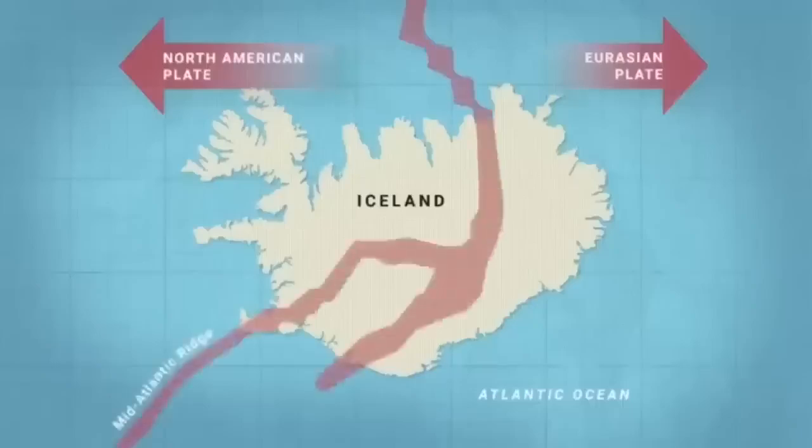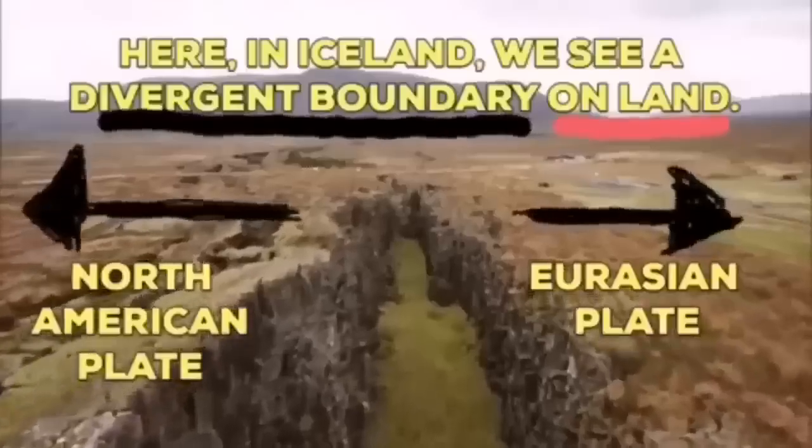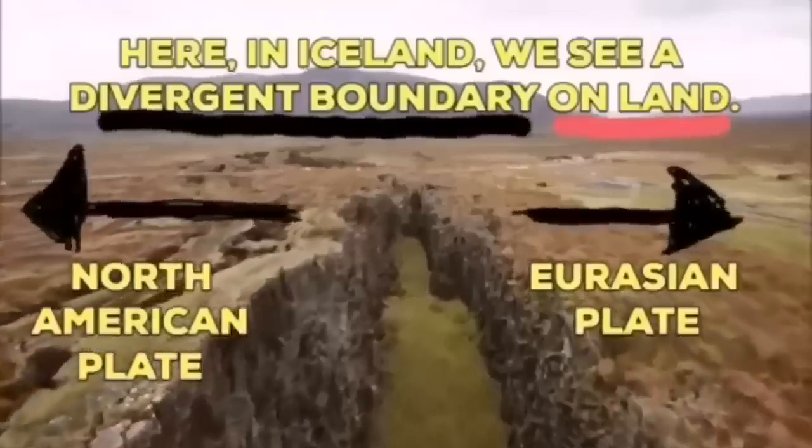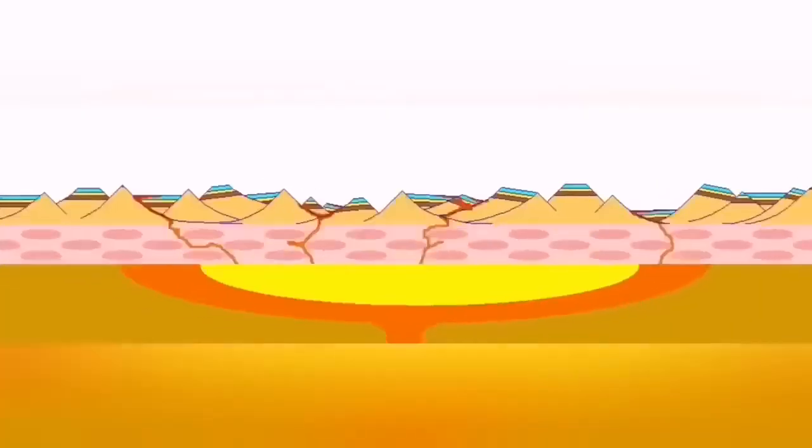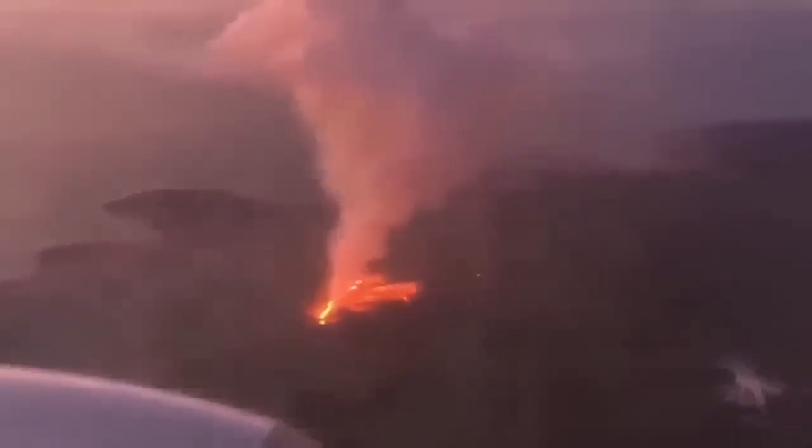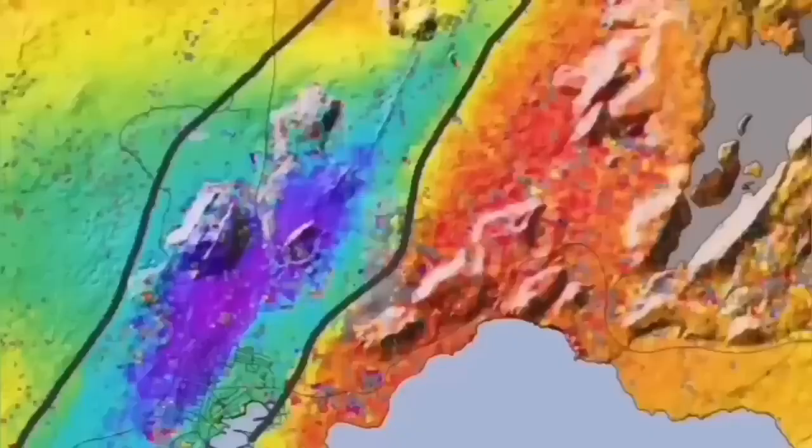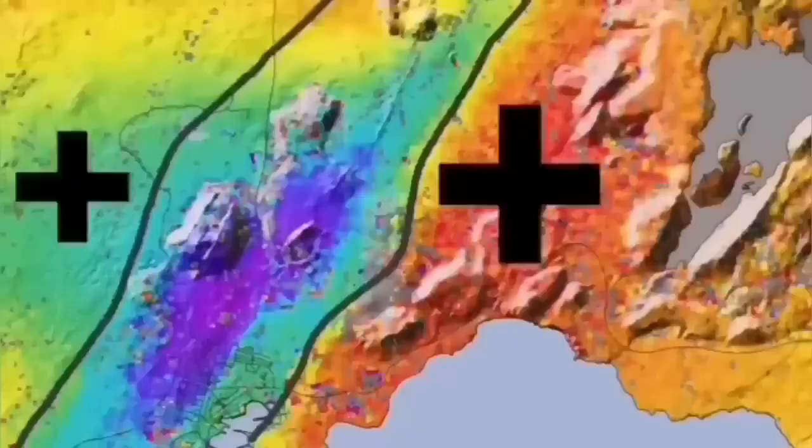Such a thing happens in Iceland on land where we can see the Eurasian plate and North American plate separating. Through these grabens, the hollows you see in the middle, magma forms and rises, creating lava eruption from the volcano.